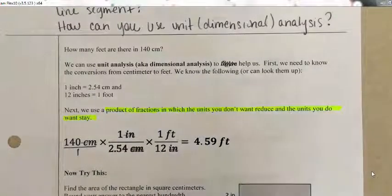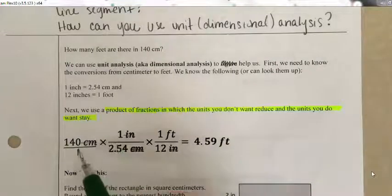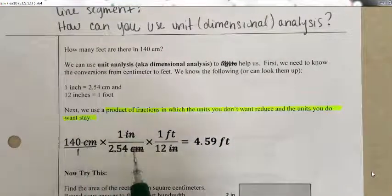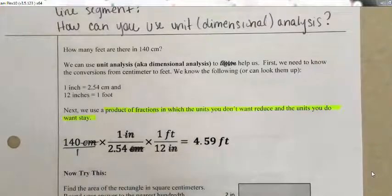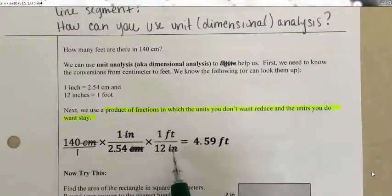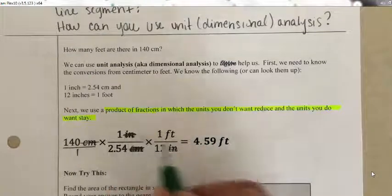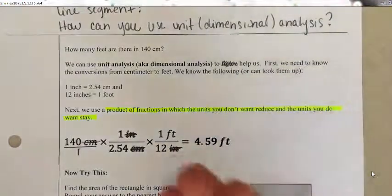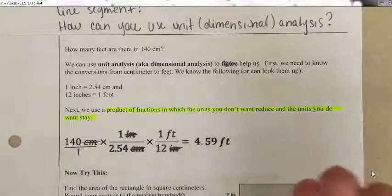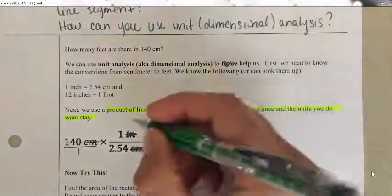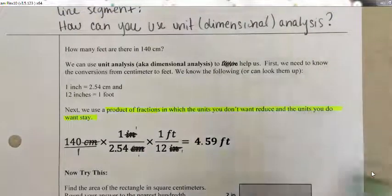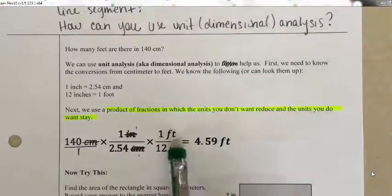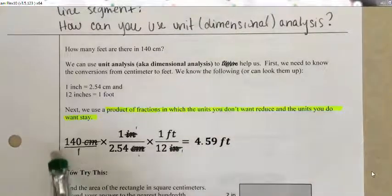All rational numbers can be written as fractions — we'll talk more about that later. Now, centimeters is in the numerator and centimeters is in the denominator, so those reduce. I also have inches in the numerator and inches in the denominator, so those reduce too. We're basically just dividing out inches over inches, which means dividing by 1. The only units left are feet in the numerator.